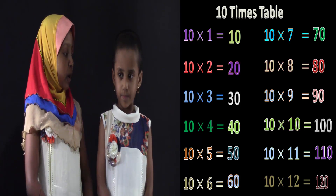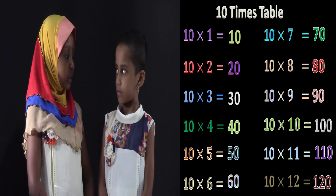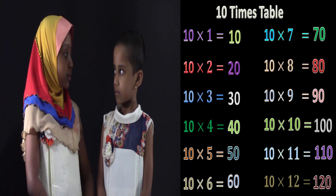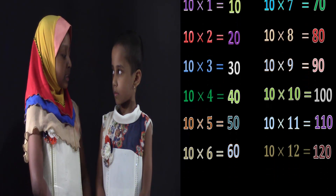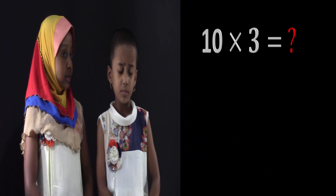Good job. Now you can open your eyes. Now that you've said your 10 times table, let's test and see if you can say them out of order. First close your eyes.